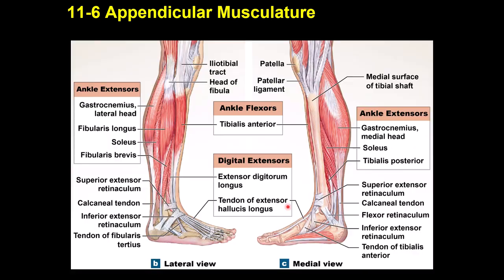Gastrocnemius and soleus together form the calcaneal or Achilles tendon. Fibularis longus and brevis are on the lateral side. Anteriorly, tibialis anterior and extensor digitorum longus are visible. Tibialis posterior is visible on the posterior leg. The flexor retinaculum is on the medial ankle and requires a different view to see.